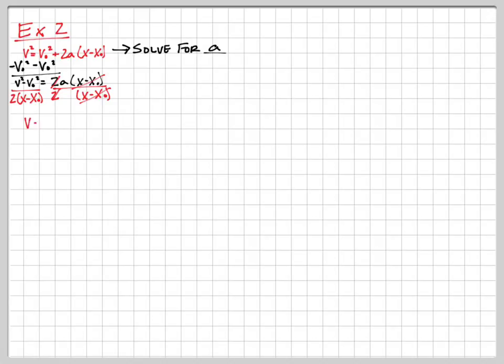We divide the left side by 2 and by (X - X₀) as well, and we're left with A = (V² - V₀²) / [2(X - X₀)]. That was pretty easy — again, we're just manipulating things and moving them around.